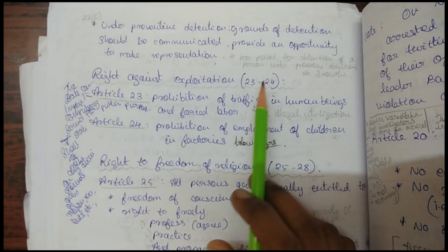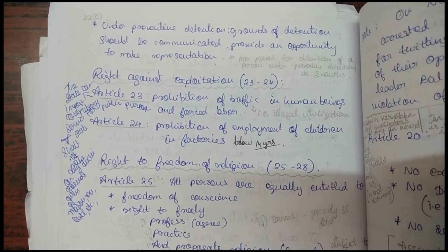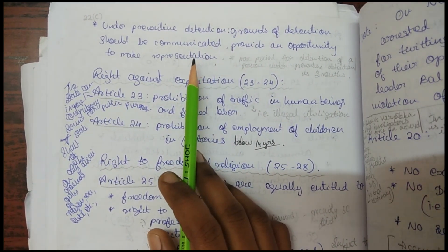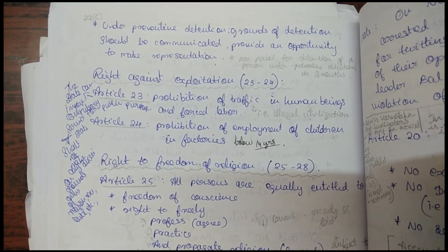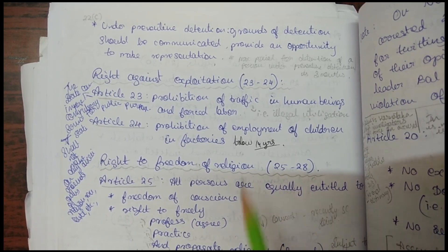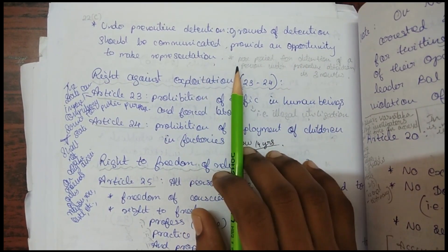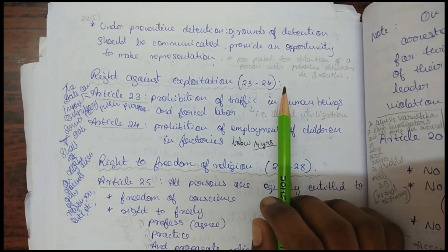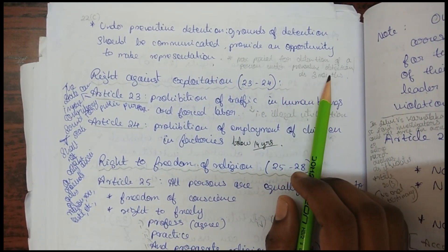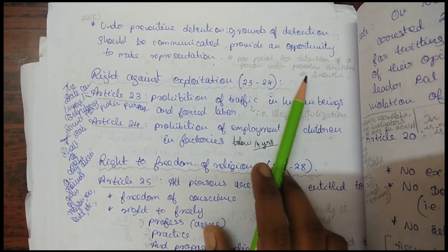Under preventive detention, no crime has yet occurred, but a person is detained to prevent a future threat — most preventive detentions are terrorism-related. The grounds of detention must be communicated to the person, and an opportunity must be provided to make a representation. The maximum period for detention under preventive detention is three months, unlike punitive detention which requires production within 24 hours.